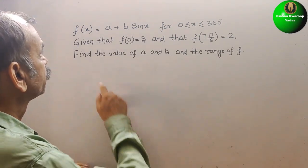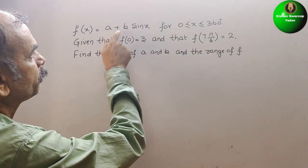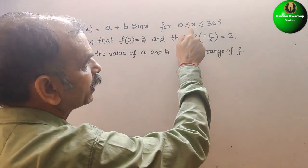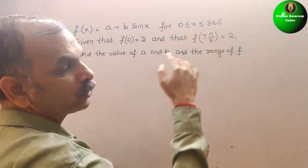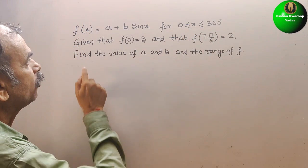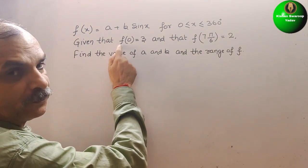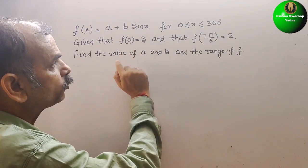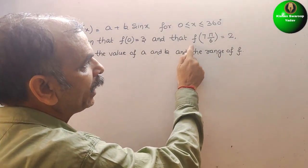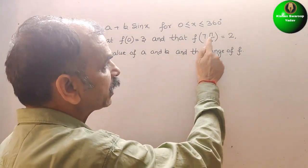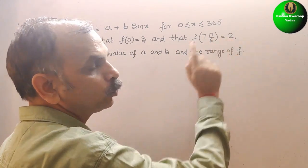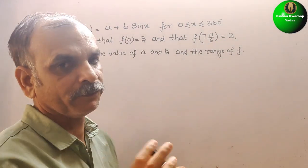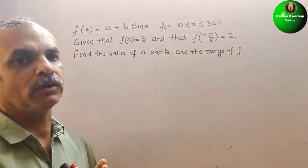The question is: f(x) is equal to a plus b·sin(x), for 0 less than or equal to x less than or equal to 360 degrees. Given that f(0) is equal to 3 and f(7π/6) is equal to 2. We have to find the value of a and b, and also the range of f.